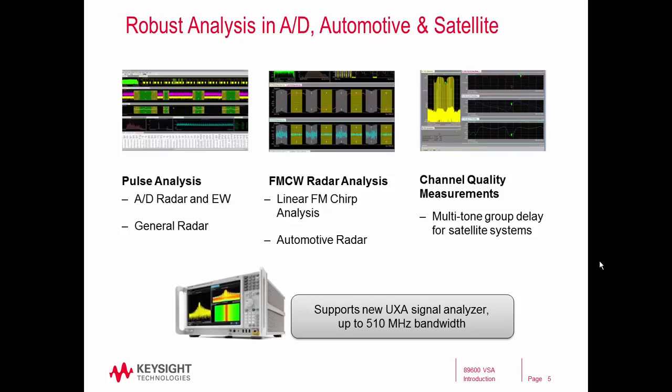We're also expanding the offering for aerospace and defense applications. In particular, we're offering new options for pulse analysis for radar and EW, a new option for FMCW radar analysis for automotive radar, and channel quality measurements for multi-tone group delay, specifically for satellite systems. Of particular interest is the support of the new UXA signal analyzer from Keysight as a measurement front end for the VSA software, which provides up to 510 megahertz of analysis bandwidth.